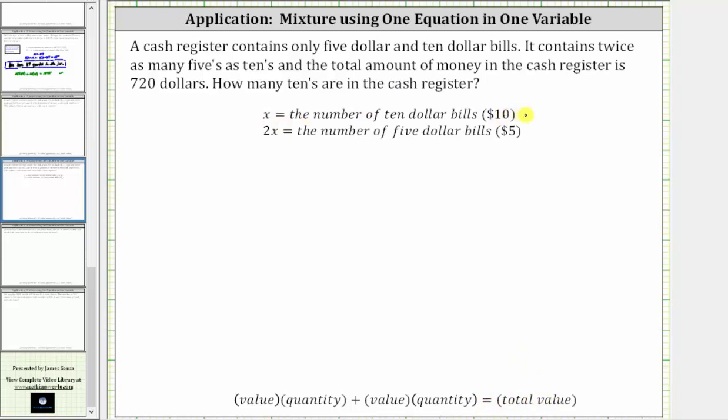So the value of the $10 bills is $10 times x, or 10 times x for our equation, plus the value of the $5 bills is going to be $5 times 2x, or 5 times 2x. And this must equal the total value of $720.